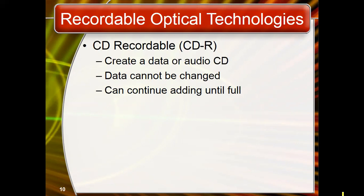Once a section of a CDR is written, it cannot be erased or rewritten, unlike CDRW which is rewritable. CDR can be recorded in multiple sessions using several methods: disc-at-once, where the whole CDR is written in one session with no gaps and the disc is closed; track-at-once, where data is written one track at a time but the disc is left open for further recording; and packet writing, used to record data in packets allowing extra information to be appended later.